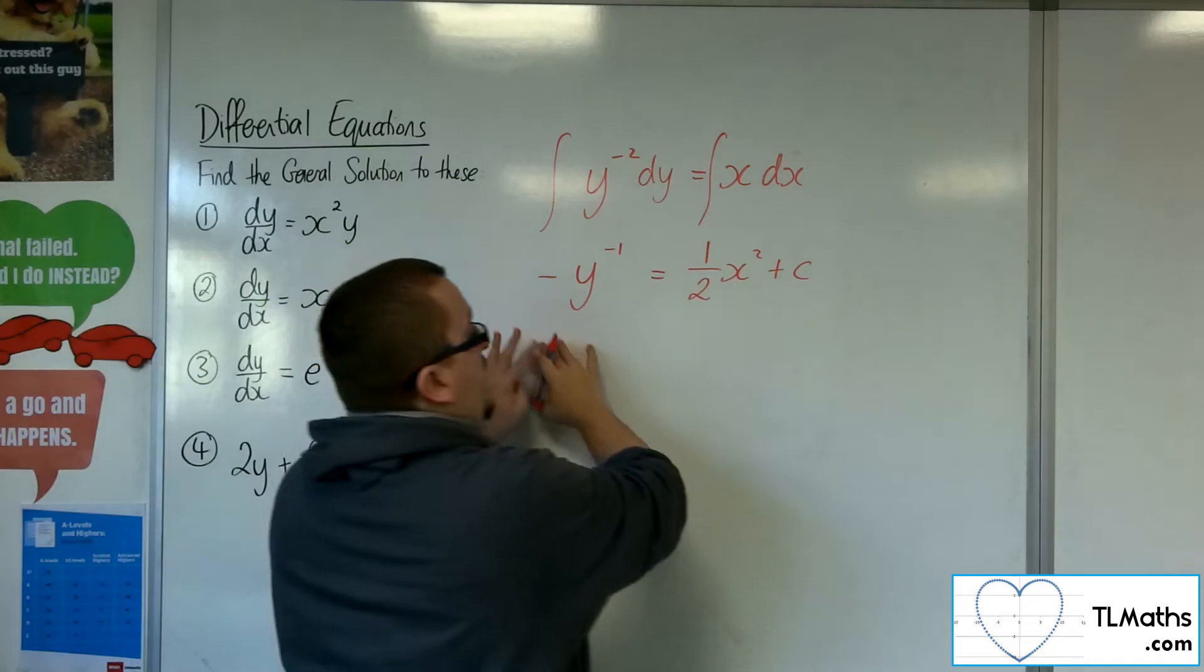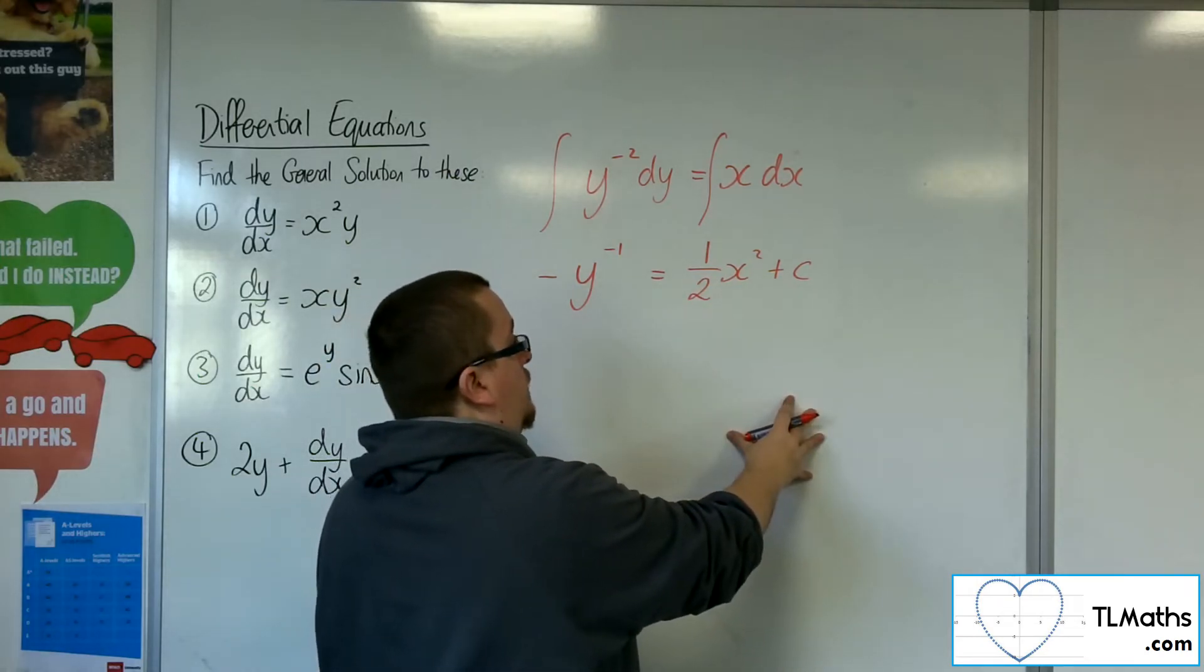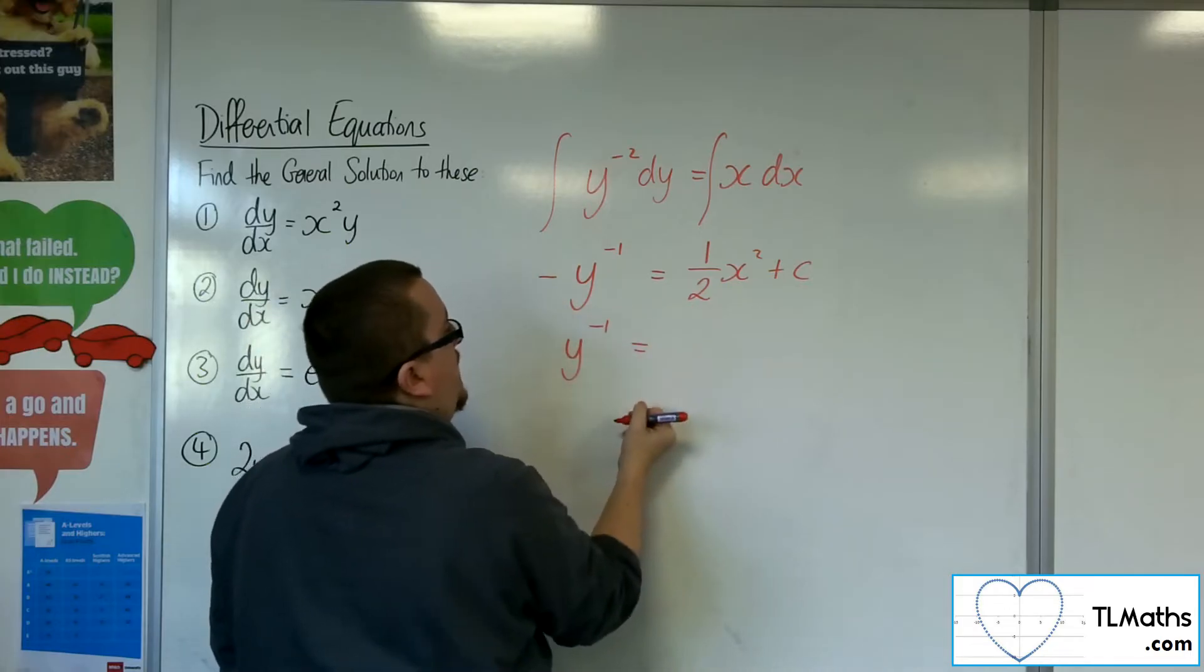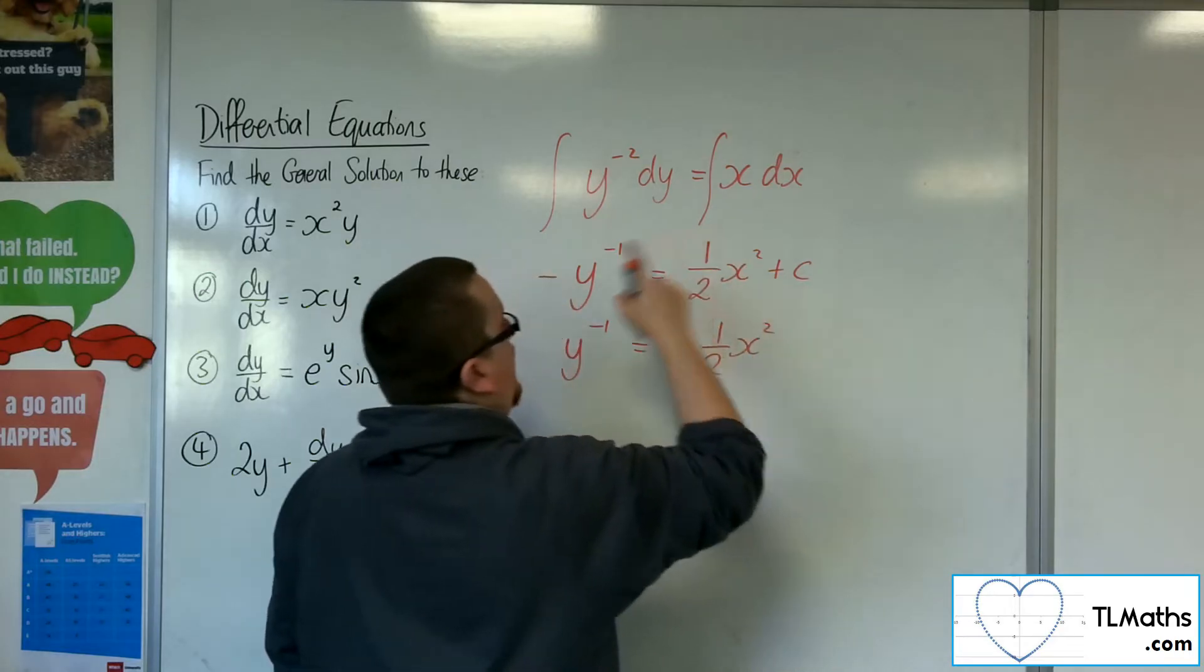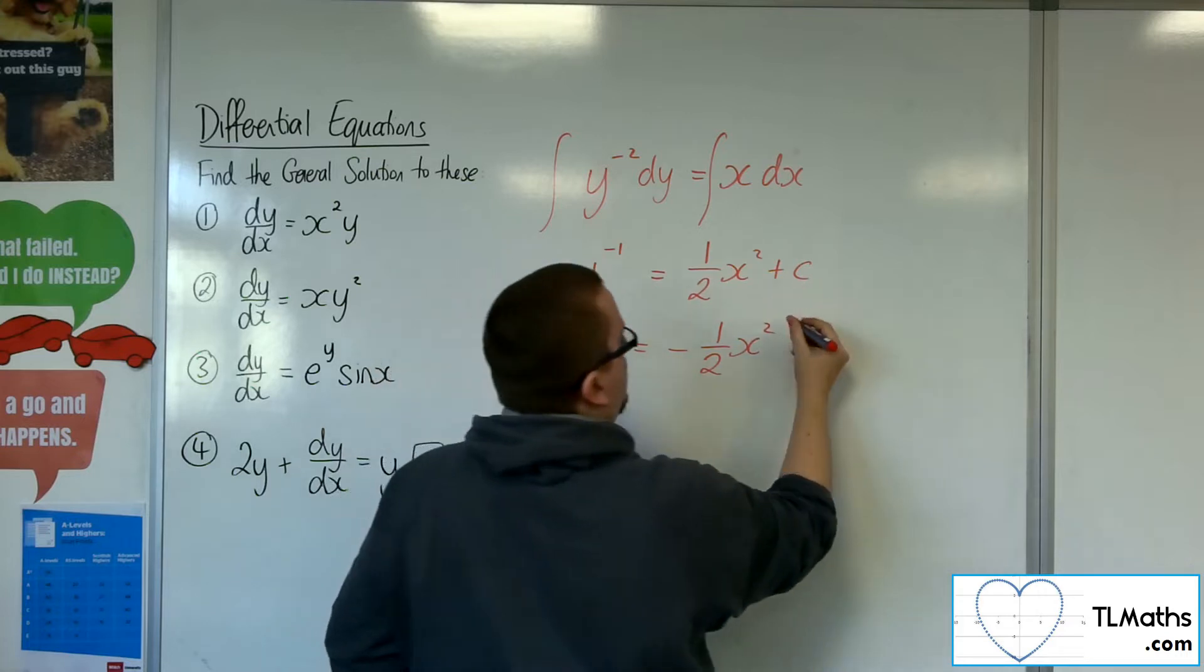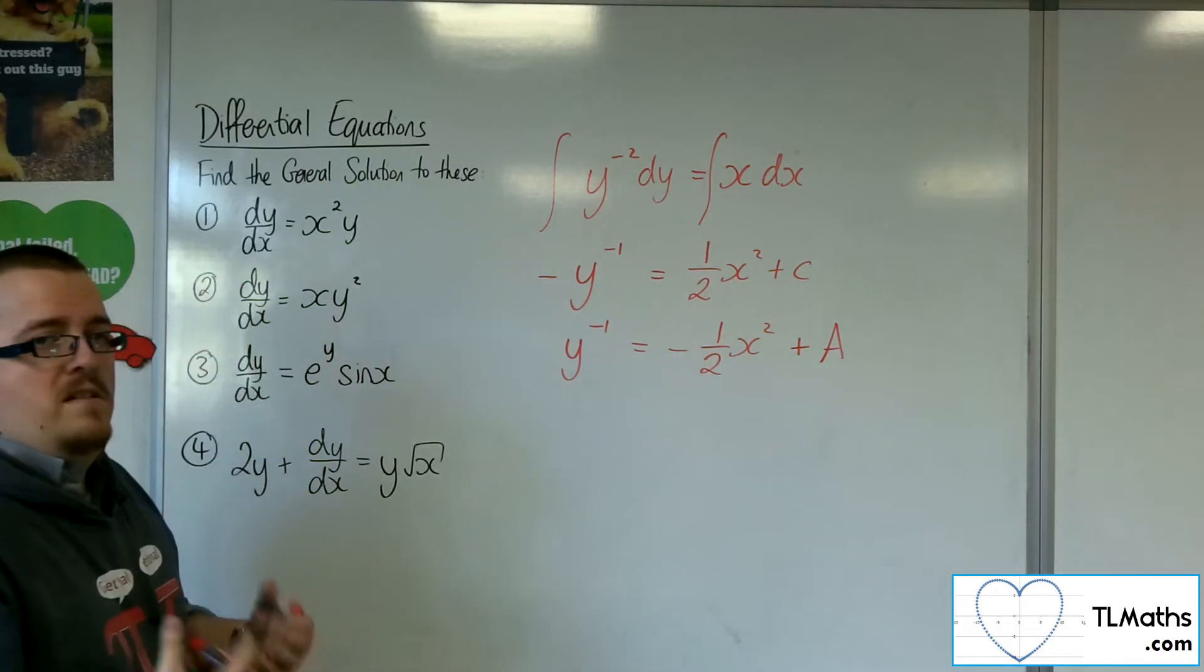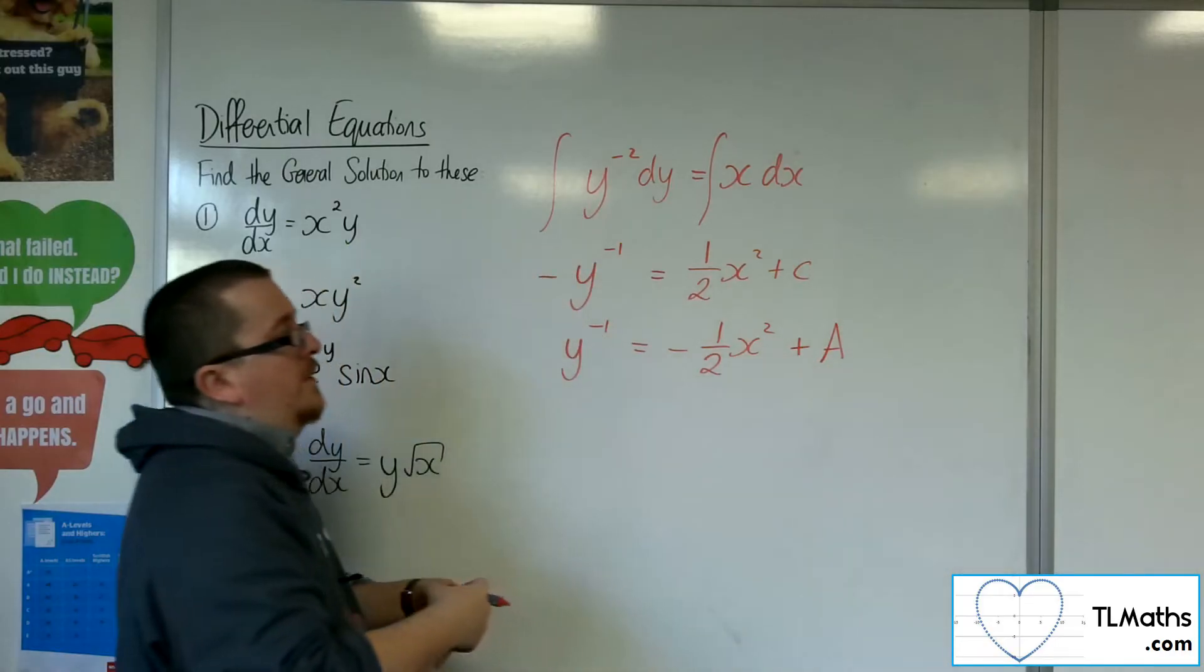Now, what I can now do is I could multiply through by minus 1 to get rid of that minus there. So I'm going to get y to the minus 1 is equal to minus 1 half x squared. And then I'm going to get a minus c. I don't want to have a minus c. So I could just replace that with another constant value, just to keep it nice and having these additions rather than subtractions.